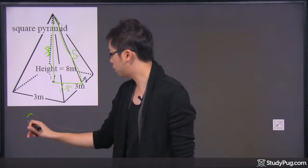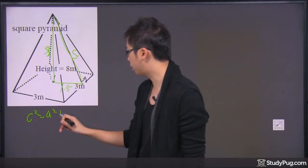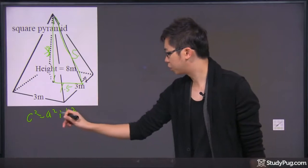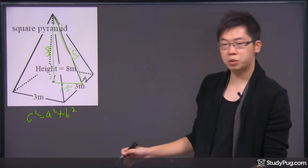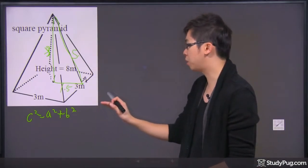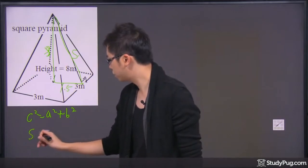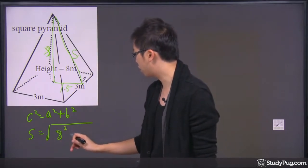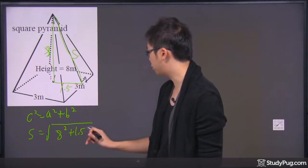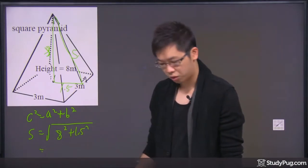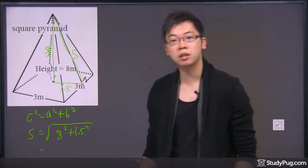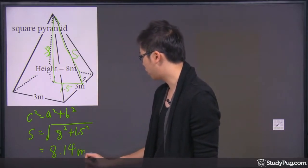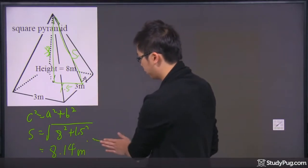So, the equation is C square equals to the A square plus the B square. So, since the slanted side is the hypotenuse, this will be the S that we're trying to find, and square root of my 8 square plus the 1.5 square. So, if you work on the math correctly, the C should give you something like 8.14, and that'll be a meter, and that's it.